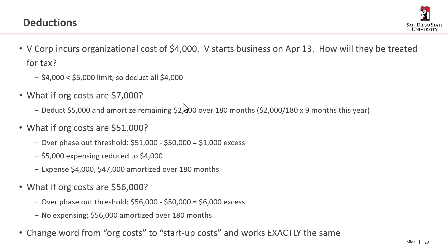What if the org costs were $51,000? Now we're above the $50,000 threshold by $1,000, so we reduce the amount we can expense by that phase-out. The $5,000 is reduced by $1,000 down to $4,000. We can expense that $4,000. The remaining $47,000 — that's $51,000 incurred less the $4,000 deducted — is amortized over 180 months.